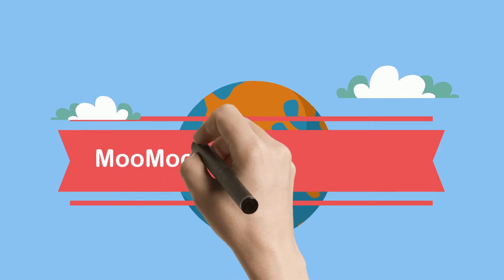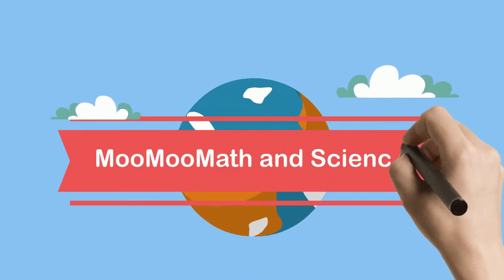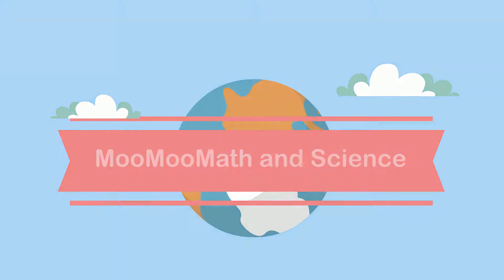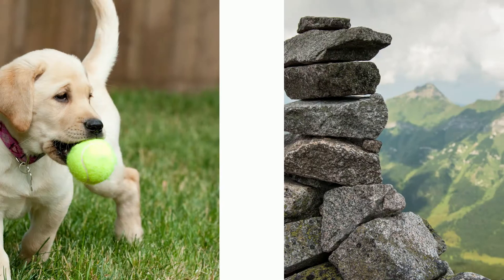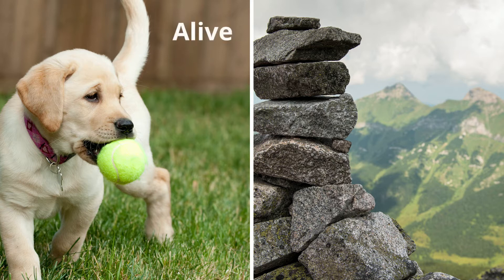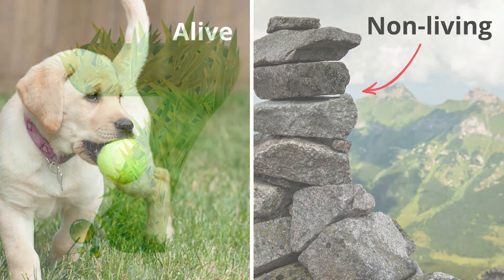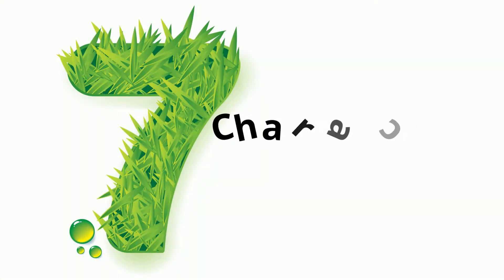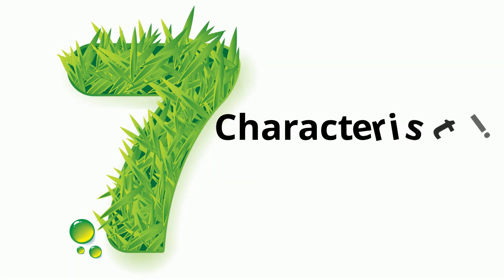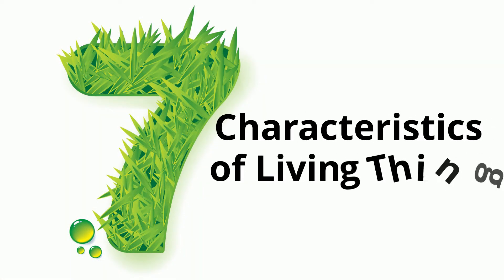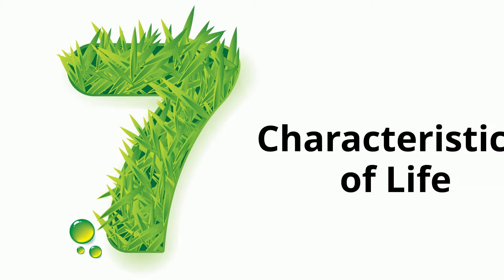Welcome to Moo Moo Math and Science and the Characteristics of Living Things. Why are some objects considered alive and other objects are considered non-living? Let's take a look at seven characteristics of living things. For an organism to be considered alive, it must have all of these traits, which can also be called the characteristics of life.